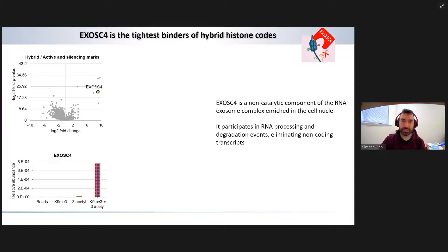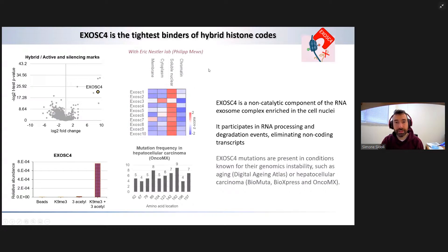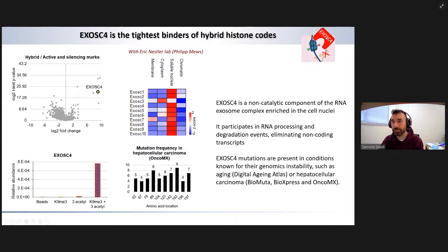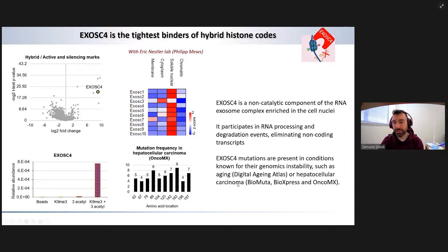The most enriched protein in this category was a protein called EXOSC4. You can see how very specifically it is enriched by the hybrid peptide and not by the controls — it is highly significant. What is interesting about EXOSC4 is that it is a non-catalytic component of the exosome complex. It works in the nucleus, is enriched in the nuclear fraction, and participates in RNA processing and degradation events, eliminating non-coding transcripts. This was very interesting for us because this protein may be involved in preventing or degrading unwanted RNA. Even more interesting is that this protein very likely doesn't work properly in anomalous conditions like cancer and aging: it is highly mutated in aging states and in hepatocellular carcinoma.